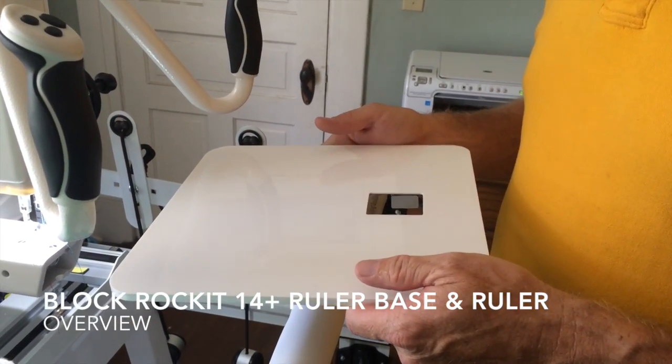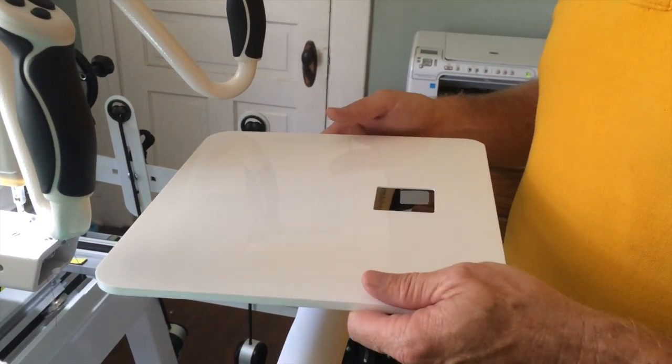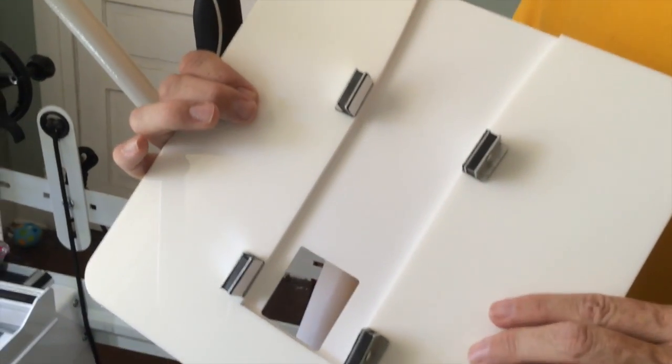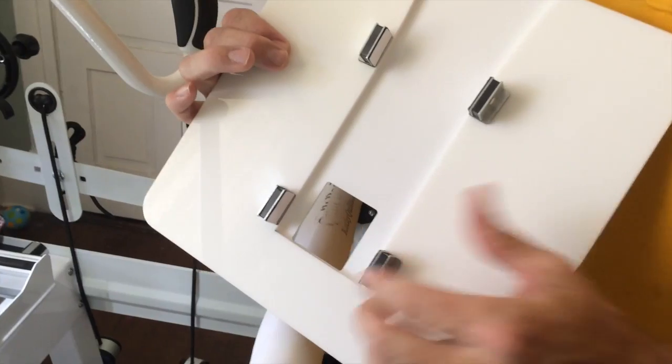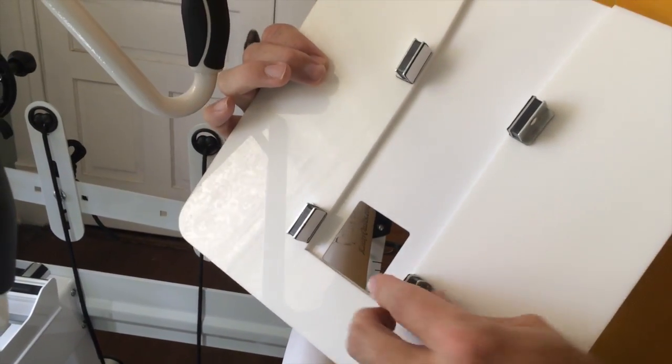This is the overview of the Block Rocket ruler base and ruler and how to use it. It has magnets that will stick to the side of your Block Rocket.